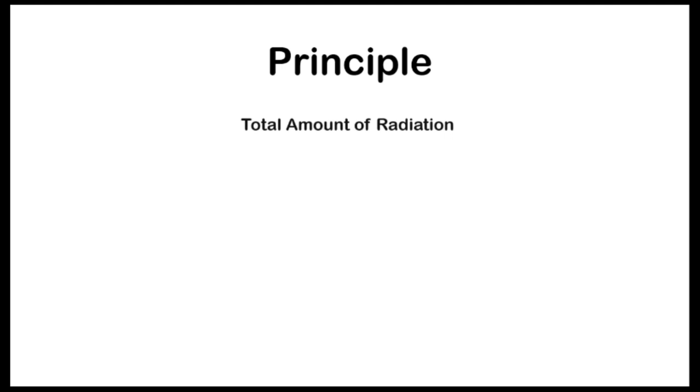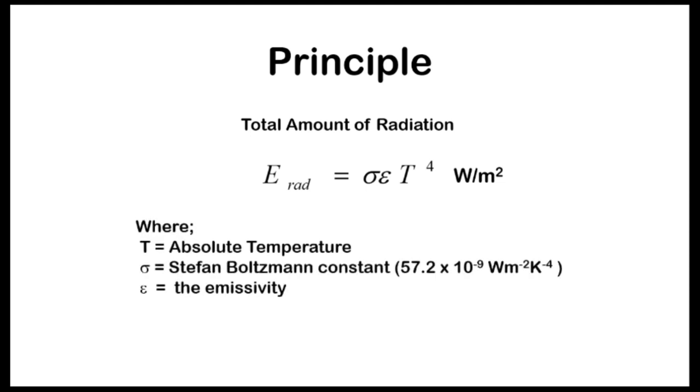The total amount of thermal radiation emitted by an object is defined by the Stefan-Boltzmann law. It is given as the total amount of radiation equals the product of sigma, the emissivity, and the absolute temperature raised to the power 4. The unit is watts per meter squared.